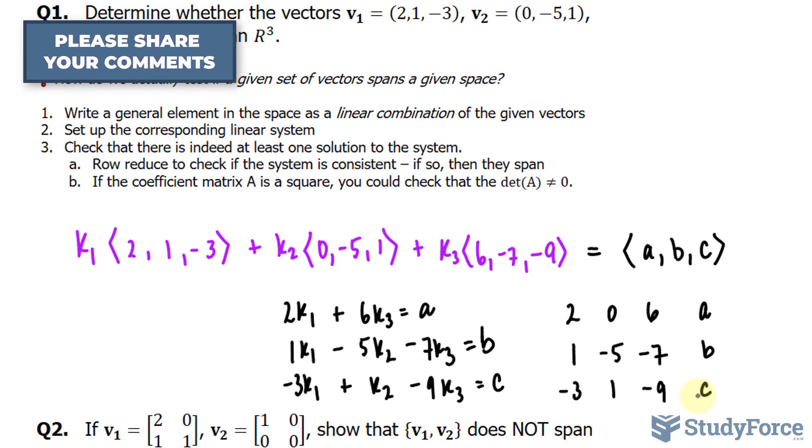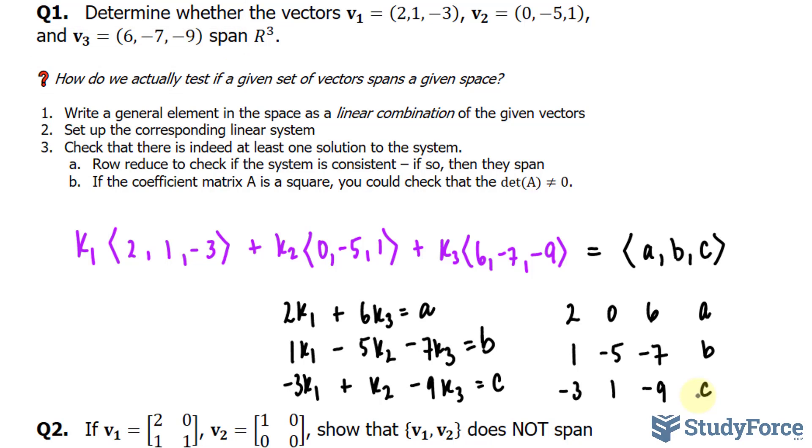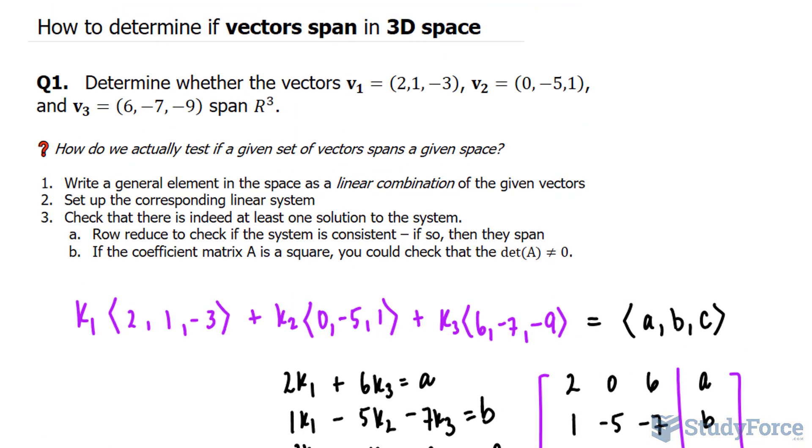At this point, you could do row reduction, but since the coefficient matrix is a square, it's easier to check the determinant. And this is what I'm referring to. So this is our matrix, and the coefficient matrix is everything here. That's a square, 3 by 3 square. So let's find the determinant. Finding the determinant of a 3 by 3 matrix is not hard to do. In fact, I'll show you up here really quickly.